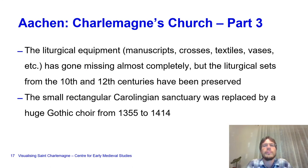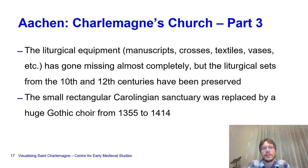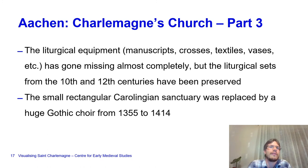The liturgical equipment of Aachen—manuscripts, crosses, textiles, vases, etc.—has almost completely gone missing, with only two Carolingian evangelaries being preserved, one in Vienna. However, liturgical sets from the 10th and 12th centuries have been preserved, more from the 12th century, and everything from around 1300 onwards has been preserved.